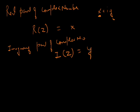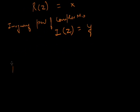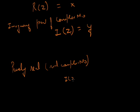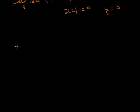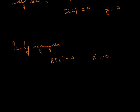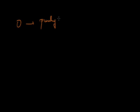The imaginary part of z is y. If the imaginary part is purely real, we call it a purely real complex number. A purely real complex number is one where the imaginary part y equals 0.